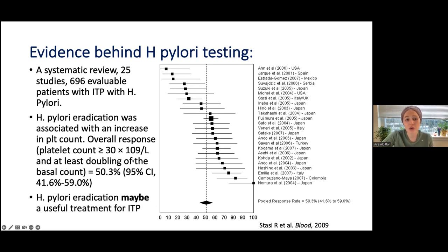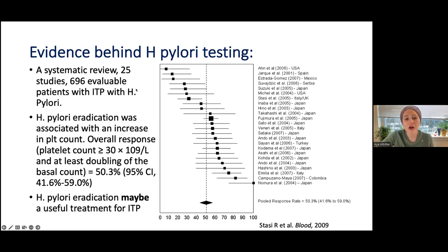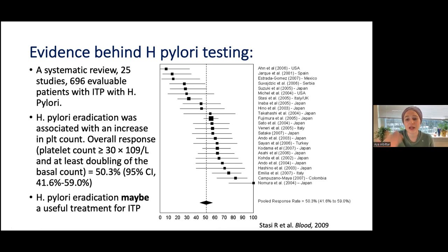In patients from regions with high H. pylori prevalence, it's very important to test them — you might actually help their ITP. If someone is not responding to treatment and you haven't sent this test yet, it's also helpful to get it done and see if that's playing a role in their non-response.